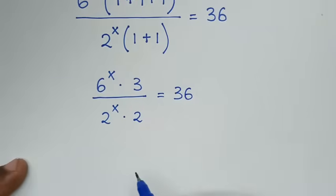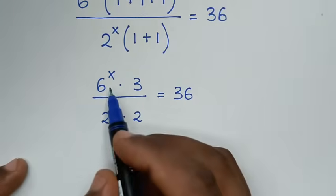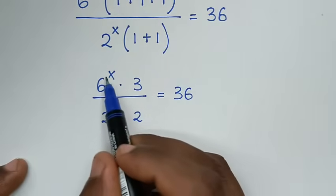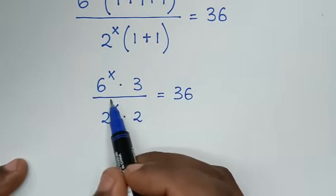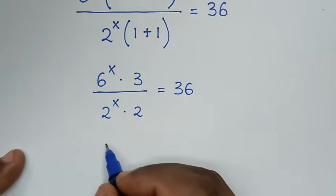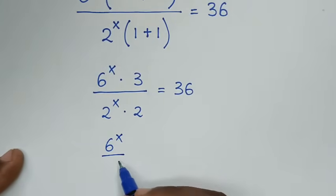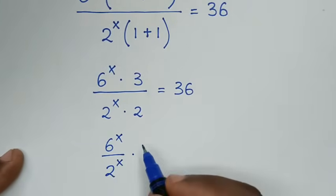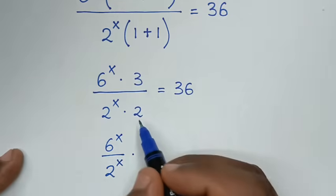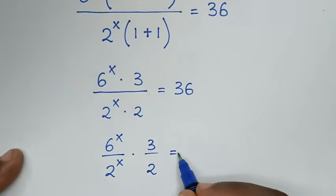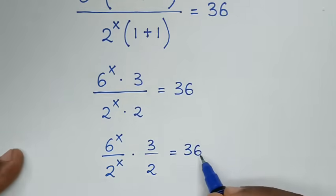Then in the next step, we'll divide here with like powers of x, so it will be 6 power x over 2 power x, times 3 over 2, is equal to 36.